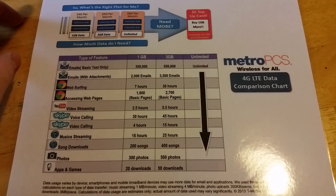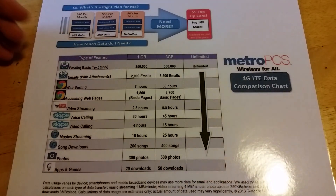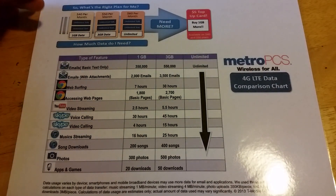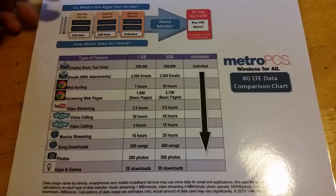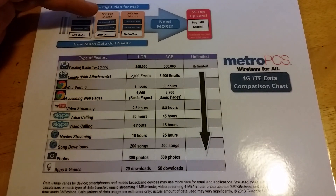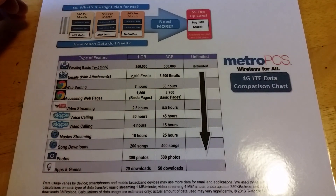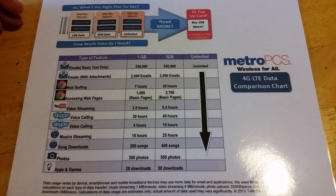We'll start up here. With the $40 plan right now, you get 1GB of data — that's temporary; you usually get 500MB. For $50, you get 3GB of data right now, which you usually get 2.5GB. And then $60 a month is unlimited everything.